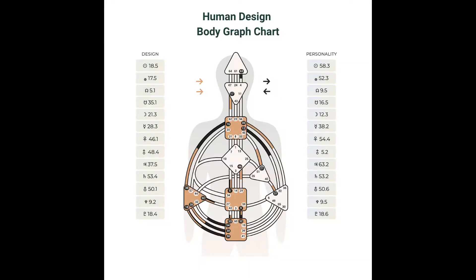If you think human design is a bit woo and it's a little crazy and you're not sure about it, I still invite you to stick around — because really the conversation is less about the arrows and more about whether more structure or more fluidity is supportive to you in your life to feel more in flow and more productive. If you pull your body graph chart or look at one online, you'll see there are four arrows at the top of the body graph chart. Those arrows can point either left or right, and whether it's pointed left or right means something different.